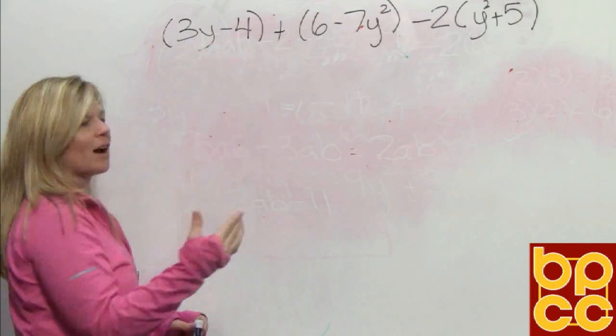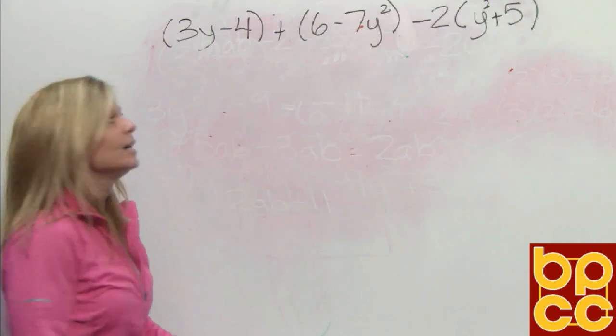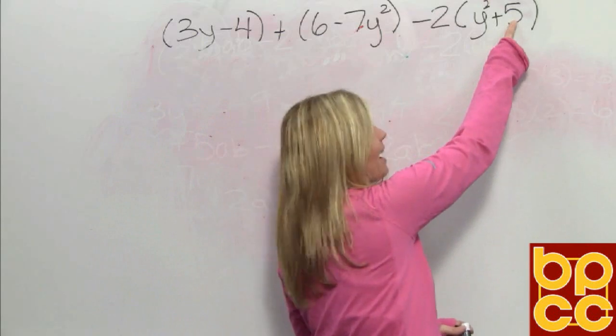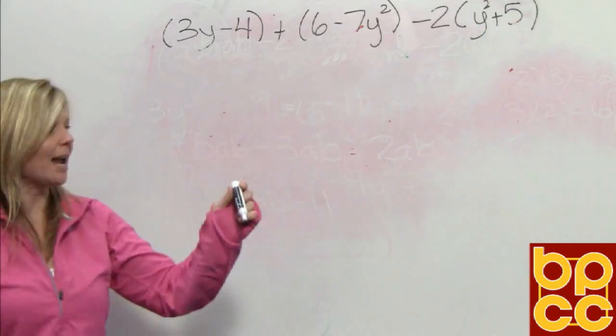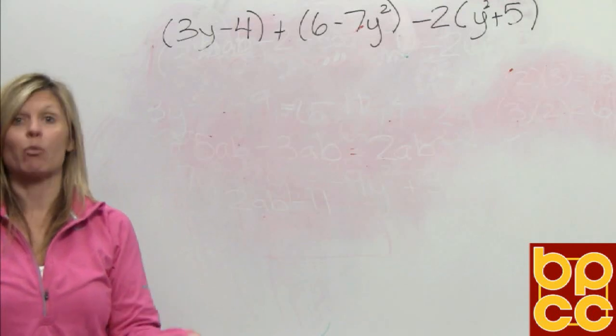You can't do anything inside of here. 3y and 4 are not alike. You can never take a number and add it to a variable. Same thing here. You can't take the number 6 and add it to a variable. Same thing here. You can't take 5 and add it to a variable. So we can't work inside the parentheses. So what we got to do is get rid of them.